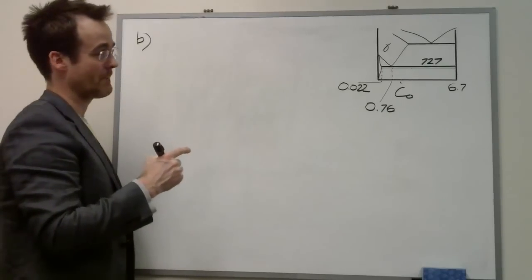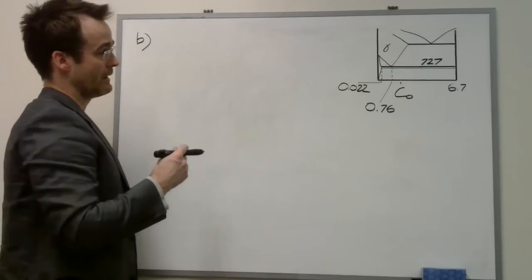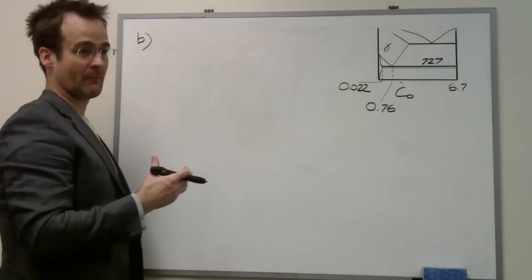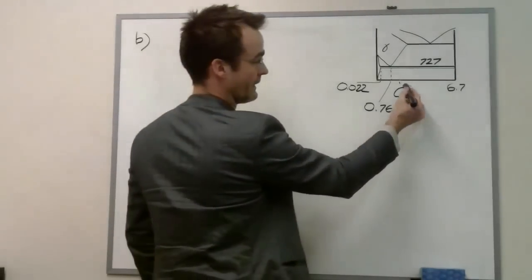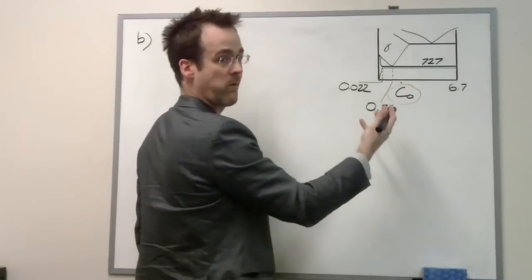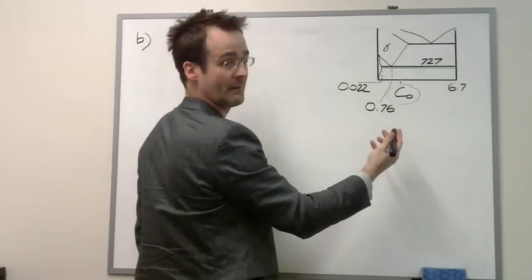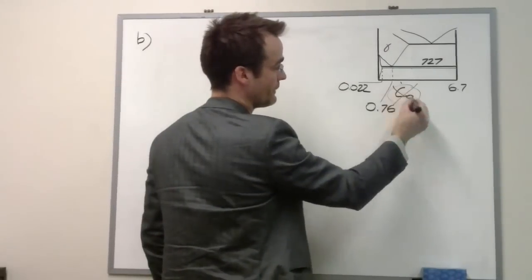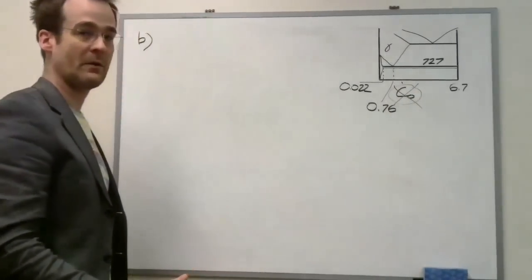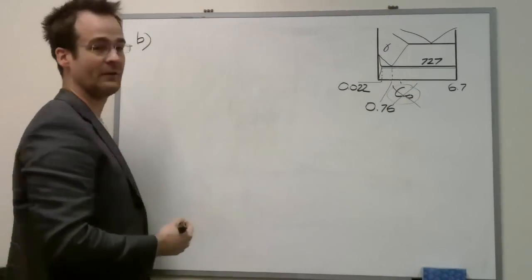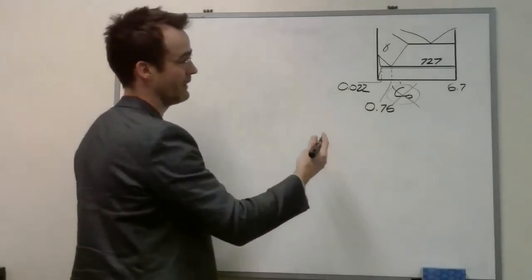So this is kind of a tricky question. The thing you have to realize is that regardless of what C0 is, perlite is always going to be the same. So you don't need to have known anything from the previous part of the question. All you have to do is do the Leverule calculation on perlite.